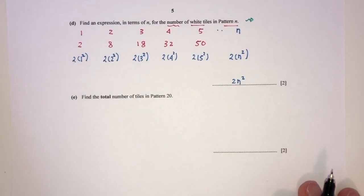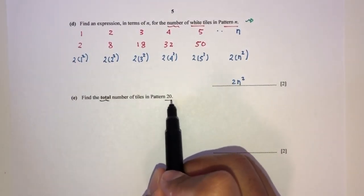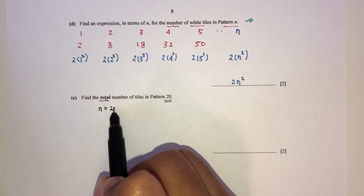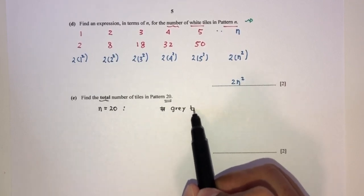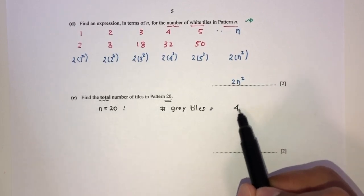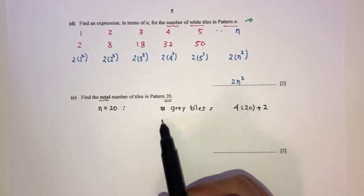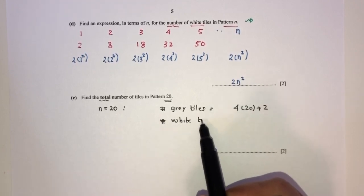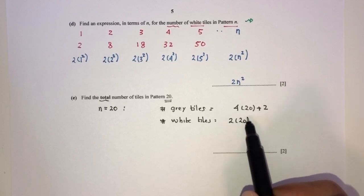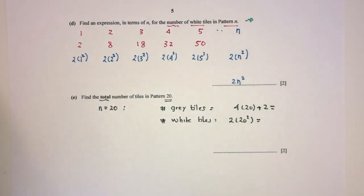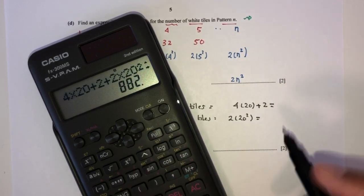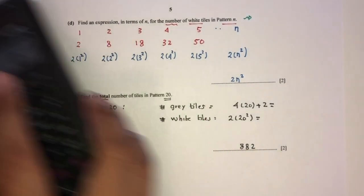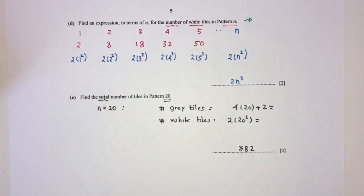For part E, we need the total number of tiles in pattern 20. When n equals 20: gray tiles equals 4 times 20 plus 2 equals 82; white tiles equals 2 times 20 squared equals 800. Total is 82 plus 800 equals 882 tiles in pattern 20.